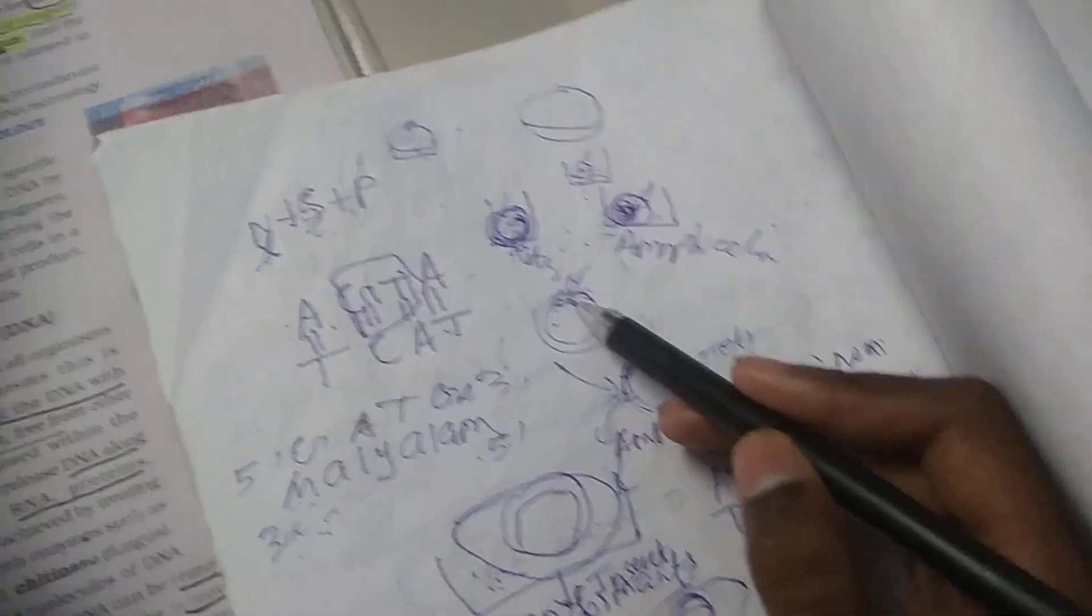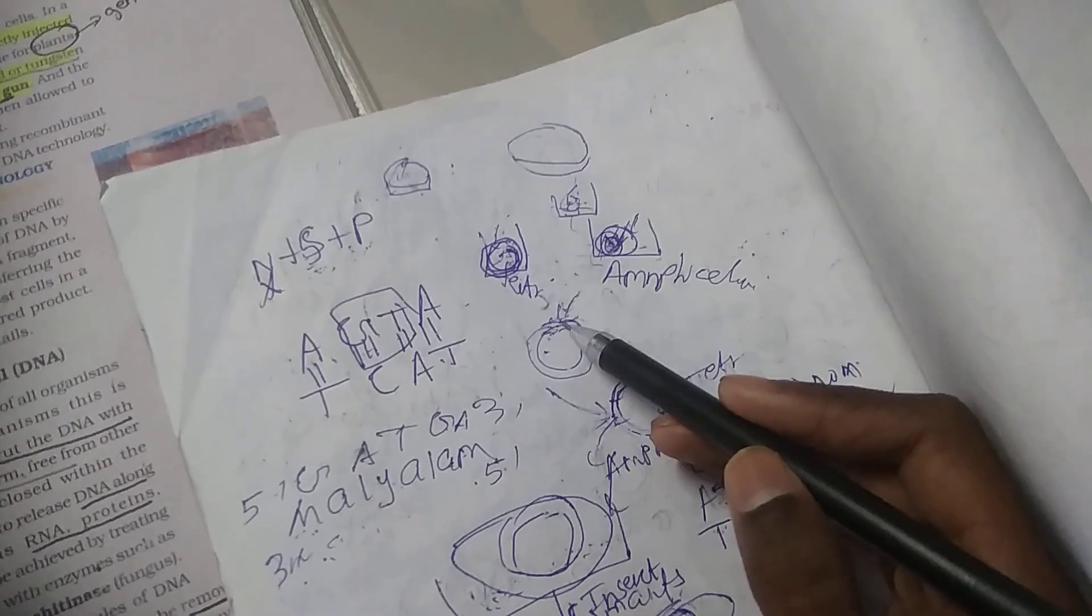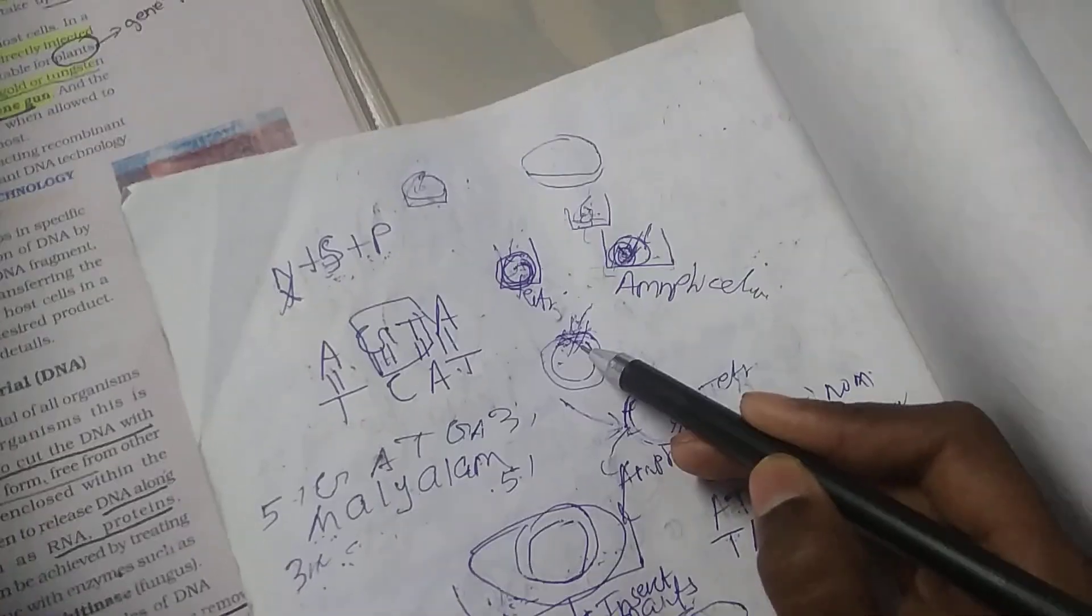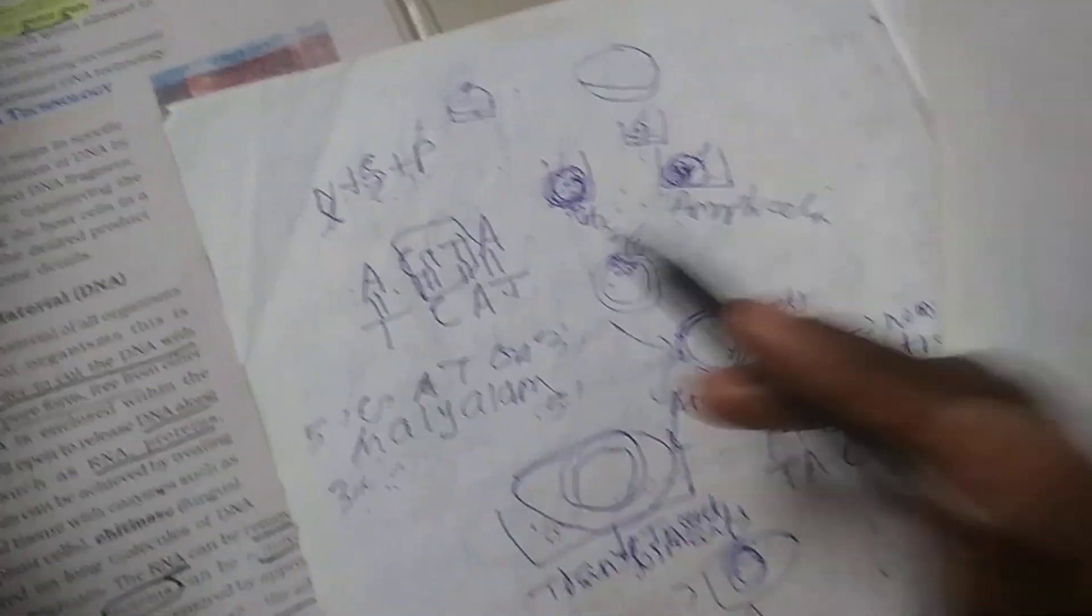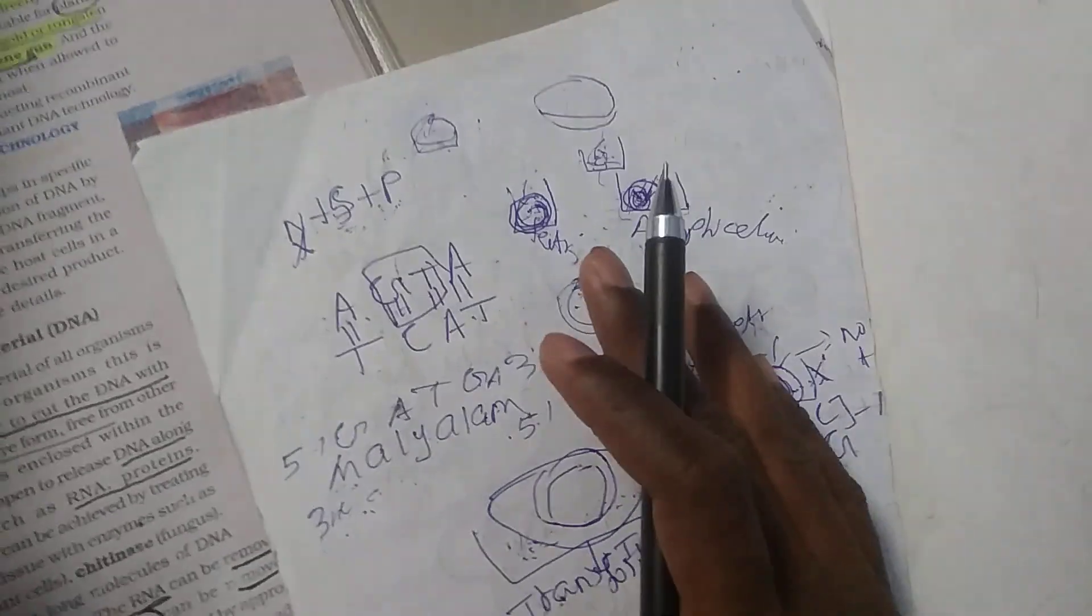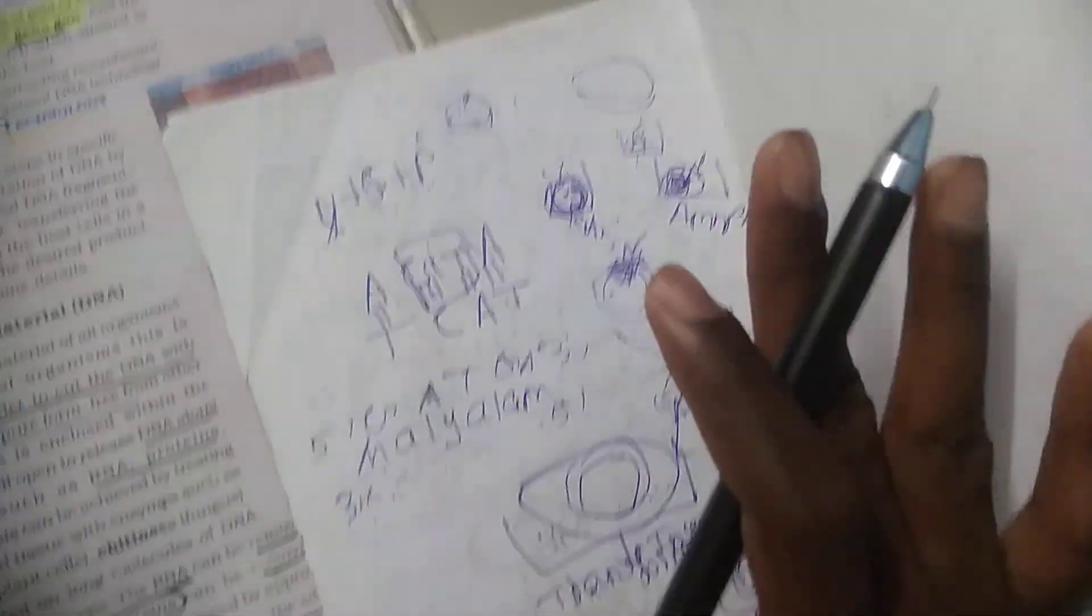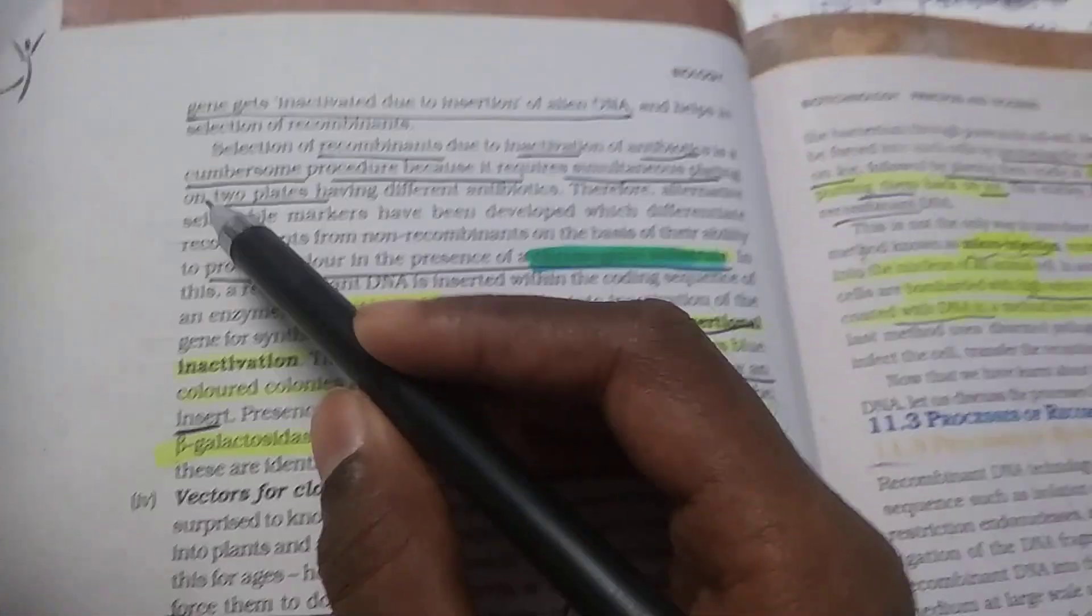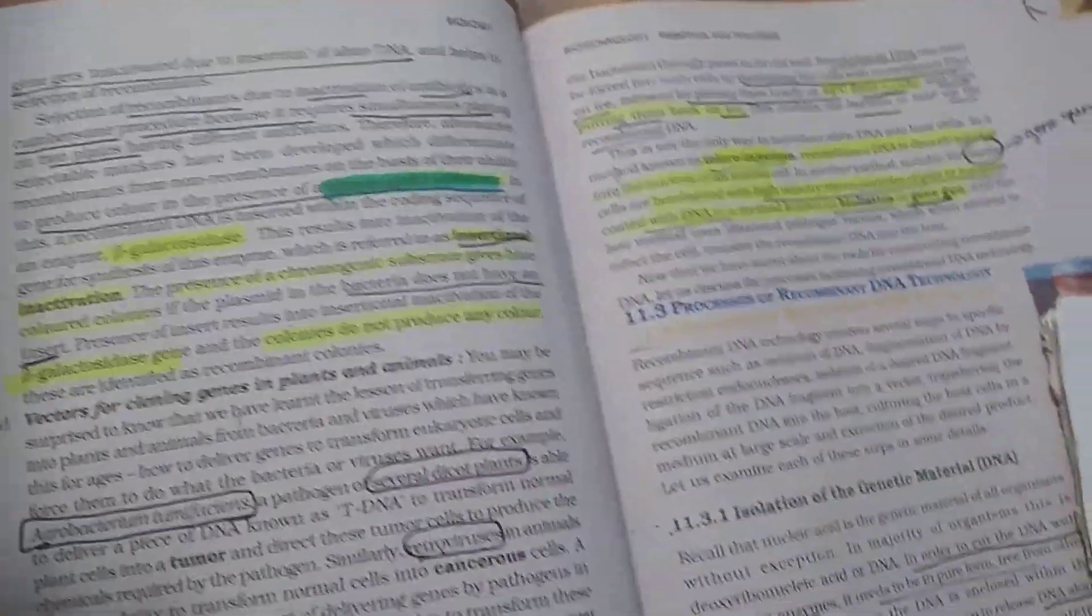Insertional inactivation. This process is called insertional inactivation. Transformants and recombinants are identified. Recombinants have the antibiotic resistance gene inactivated where DNA was inserted.